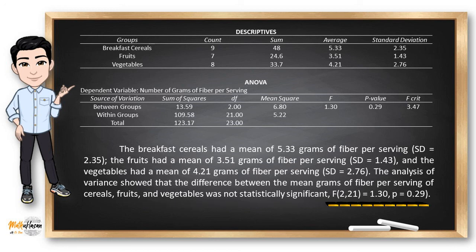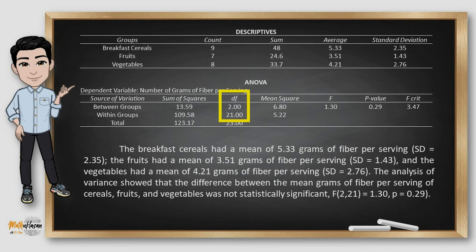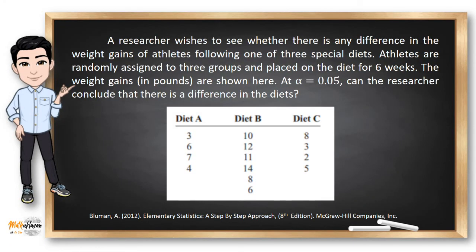And we can report the values by using this format. F stands for the F-test. The 2 here represents the degrees of freedom for the between groups, so I got 2 here from this cell, while 21 came from the degrees of freedom of the within groups. So, 2 and 21. The F-test is 1.3 while the P-value is 0.29. In other words, we have difference in their means but this is not statistically significant.